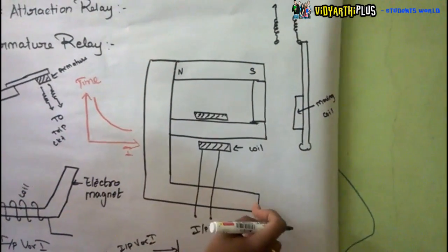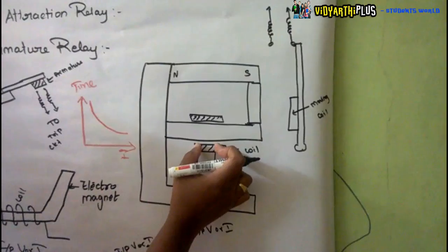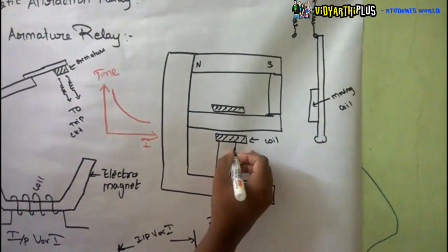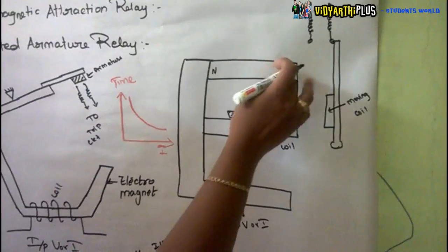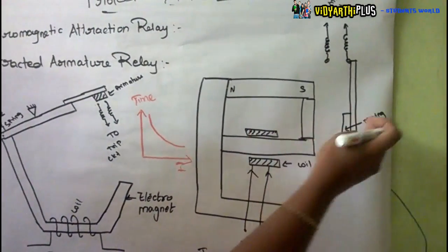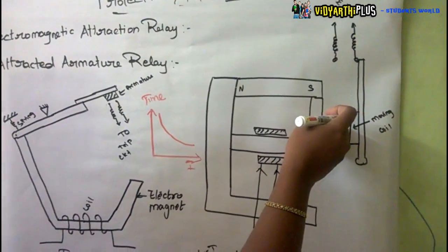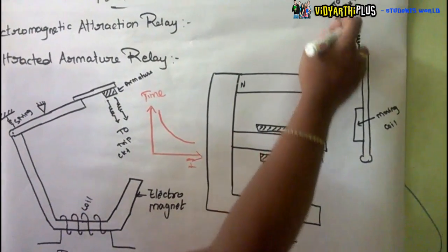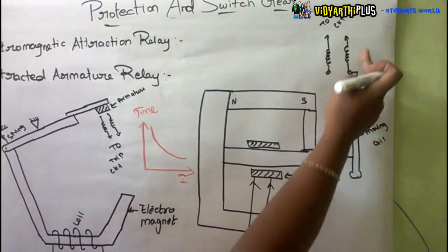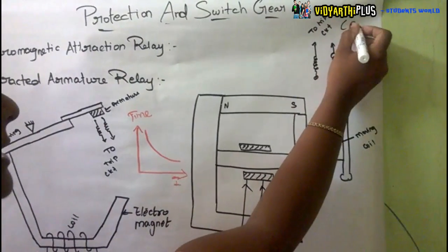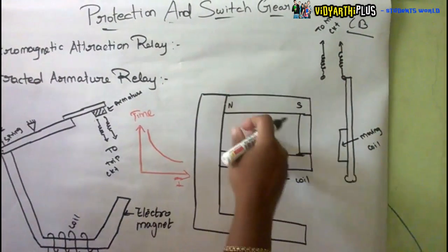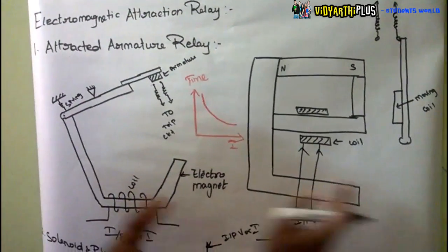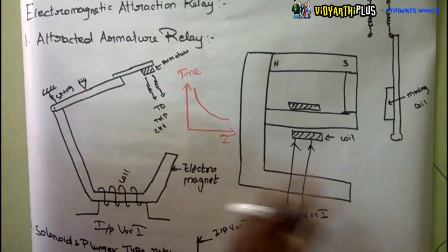This is an electromagnet, and the input we are giving is a voltage or current. During fault conditions the current goes high, the electromagnet becomes fully energized, and it attracts the armature. As the armature is attracted, it energizes the trip circuit, which opens the circuit breaker and the faulty part is isolated from the healthy part. So there are two representations of the Attracted Armature Type Relay.